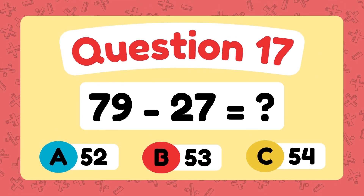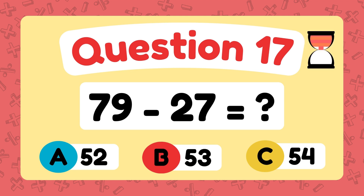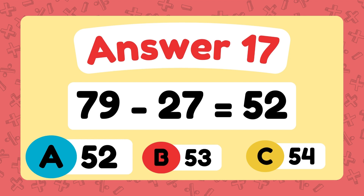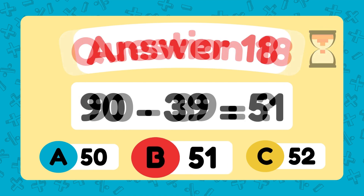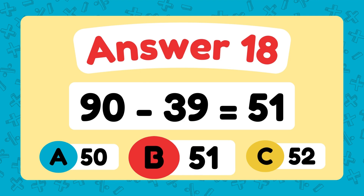What is 79 minus 27? The answer is 52. What is 90 minus 39? The answer is 51.